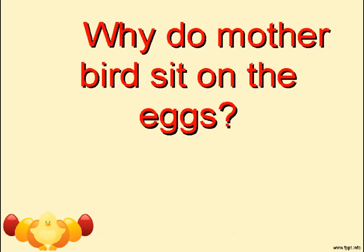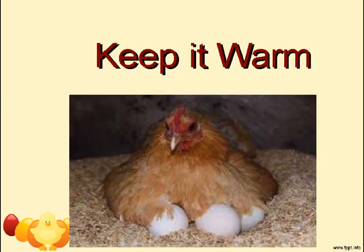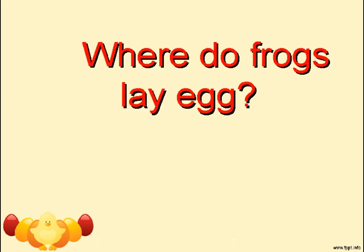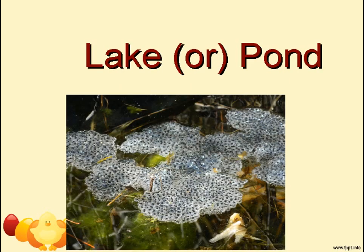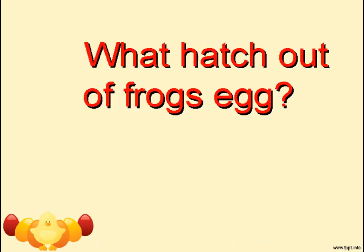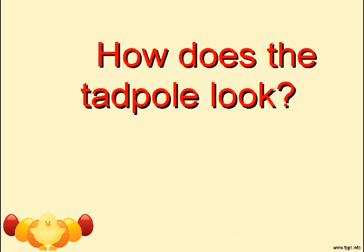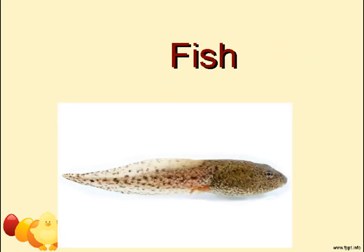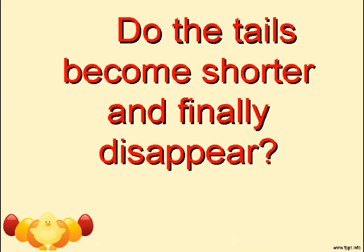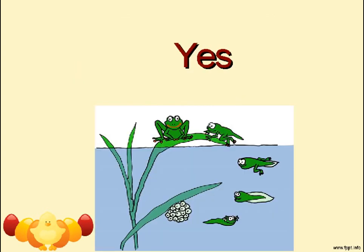Why do mother birds sit on the eggs? To keep them warm. A frog's eggs hatch in a lake or pond into young ones called tadpoles. How does a tadpole look? Like a fish. Do the tails become shorter and finally disappear? Yes.